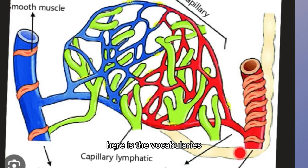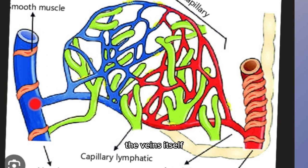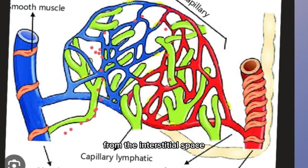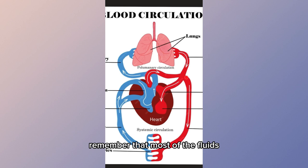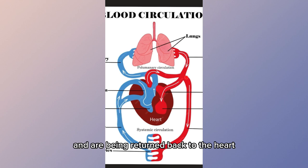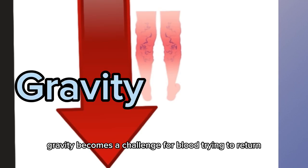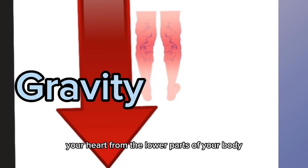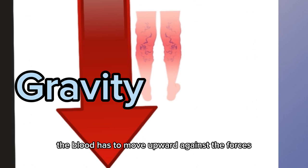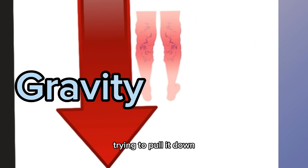To give you a bigger picture: here are the capillaries on the venous side, the veins themselves, and the lymphatics. The role of the lymphatic system is to collect excess fluid from the interstitial space so that under normal conditions we don't swell. Most of the fluid and blood is reabsorbed back to the veins and returned to the heart. When you're standing, gravity becomes a challenge for blood trying to return to your heart from the lower parts of the body.